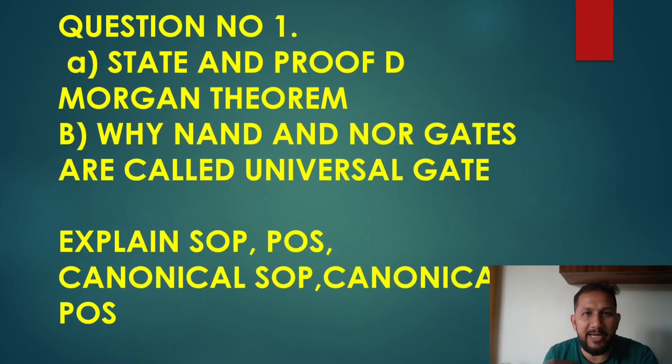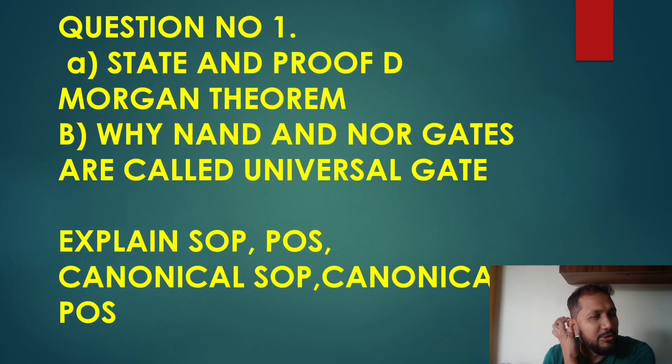The first question is state and proof of De Morgan theorem. If De Morgan theorem is state and proof, 5 marks, we have a question. Tabular format data is approved. Next, NAND and NOR gate are called universal gate. This is a basic question, but it is repeatedly asked.